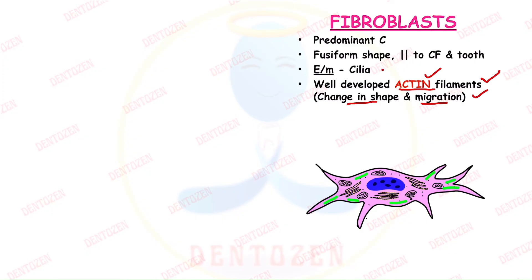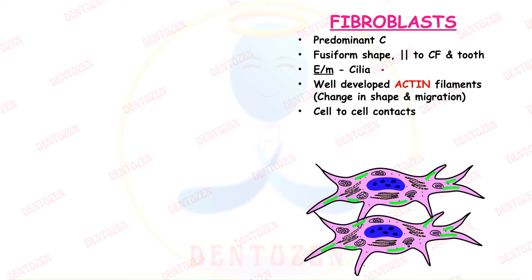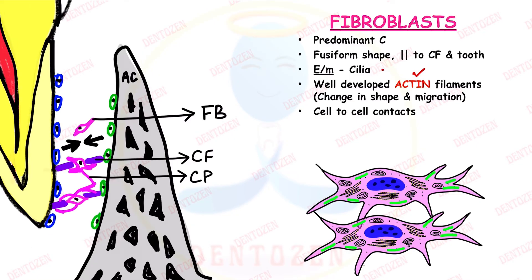Because of actin filaments inside them, fibroblasts can change shape and migrate — their motility is due to presence of actin filaments. These cells can develop cell-to-cell contacts through their processes, which can contact each other and also contact the extracellular matrix. When actin filaments contract, the cells show motion.